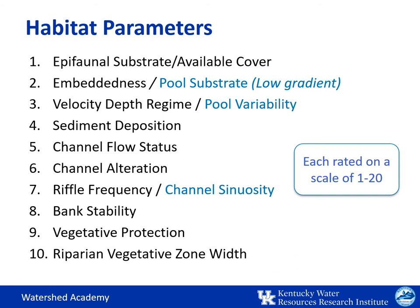Some parameters specify different considerations. For example, for high gradient streams we look at the velocity-depth regime of the flow types in number 3, but since low gradient streams mainly only display pools, we assess the variability of pool types for characteristic number 3. Each parameter is assessed and rated on a scale from 0 to 20. Then all of the ratings are totaled to derive a habitat ranking for the site, which is then compared against the reference or ideal condition to make an assessment relative to the region.